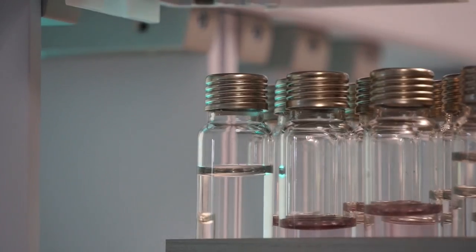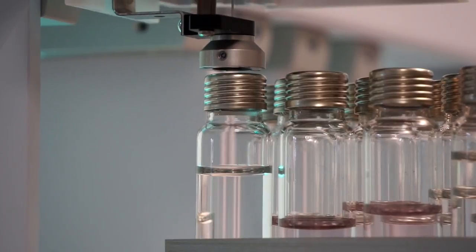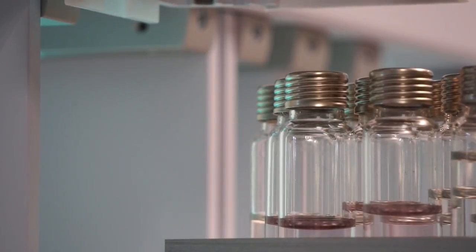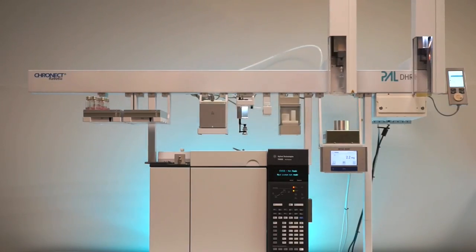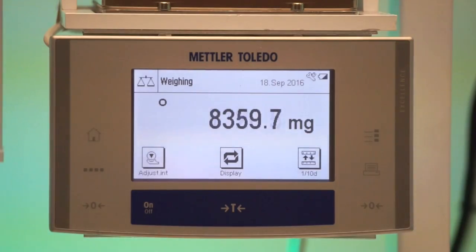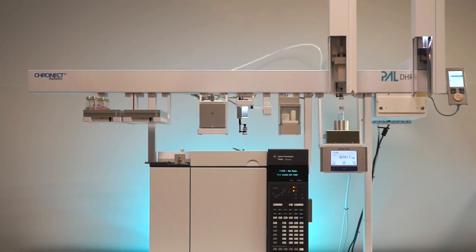The left arm of the autosampler is equipped with a changer tool for headspace injection and transports the sample inside a 20ml vial to the analytical balance. The analytical balance determines and documents the weight of the sample. The left arm transports the sample back from the analytical balance to the rack.